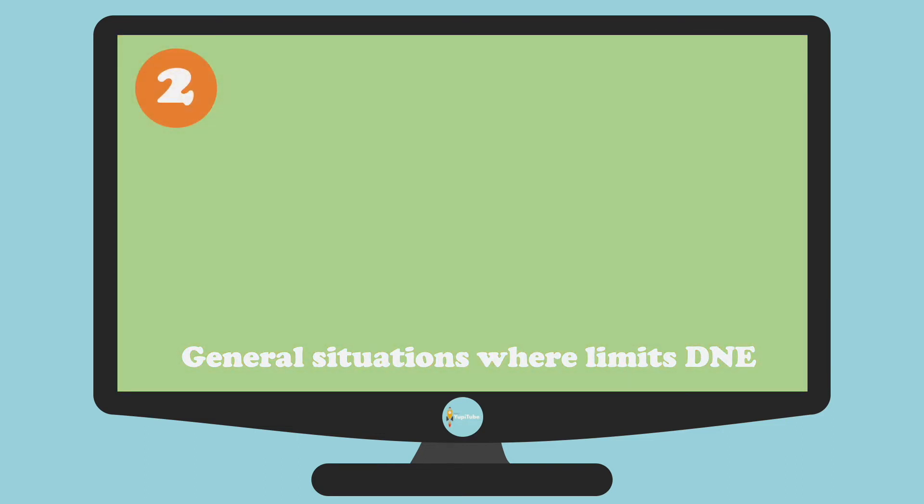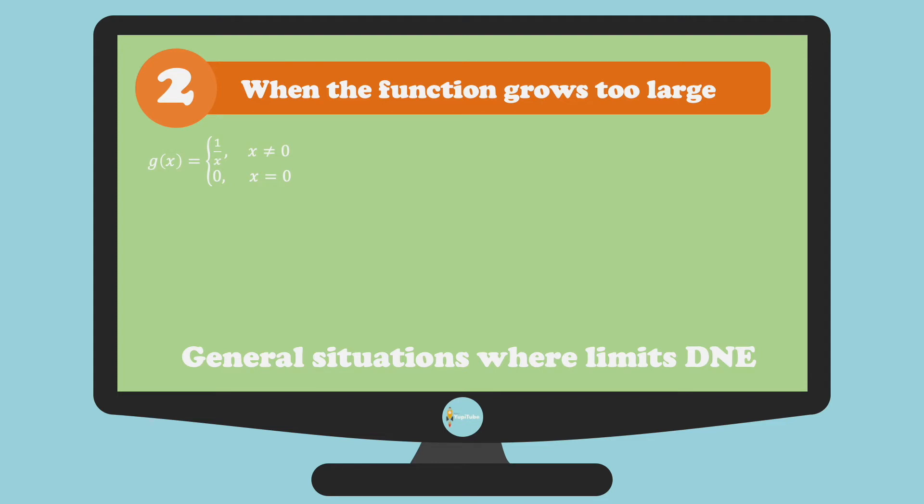The second case where the limit doesn't exist is when the function grows too large—that is, when the graph approaches negative infinity or positive infinity. Let's try to find the limit of g(x) as x approaches 0.